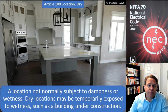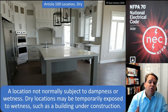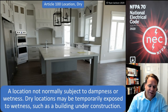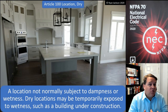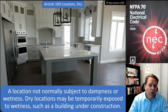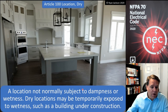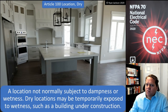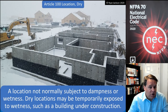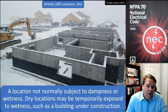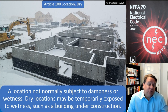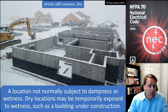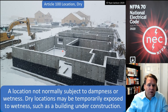A dry location is nice and easy — a location not normally subject to dampness or wetness. Inside your house you're obviously in a dry location, but it's not quite as simple as that. Can a dry location ever get wet? Sure — it's just not normally subject to dampness or wetness. Dry locations can be temporarily exposed to wetness, such as a building under construction. So these buildings under construction are actually classified as dry locations, believe it or not.